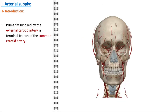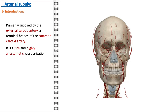The arterial supply to the face is primarily provided by the external carotid artery, a key terminal branch of the common carotid artery. This artery branches out into several major arteries that supply different areas of the face, including the facial artery, which nourishes the anterior facial structures; the superficial temporal artery, supplying the lateral aspects of the face and scalp; and the maxillary artery, responsible for the deep facial regions. This extensive vascular network is characterized by its rich and highly anastomotic nature, meaning there are many interconnections between the blood vessels.